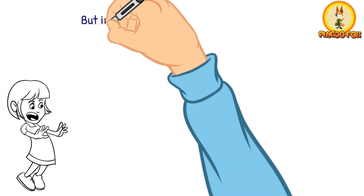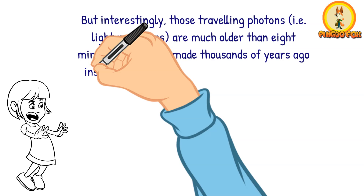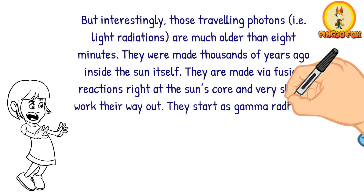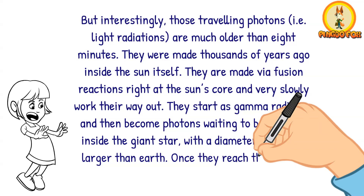But interestingly, those traveling photons, that is light radiations, are much older than 8 minutes — they were made thousands of years ago inside the sun itself. They are made via fusion reactions right at the sun's core and very slowly work their way out. They start as gamma radiation and then become photons waiting to be released inside the giant star, with a diameter 109 times larger than Earth. Once they reach the surface, they escape and travel fast.